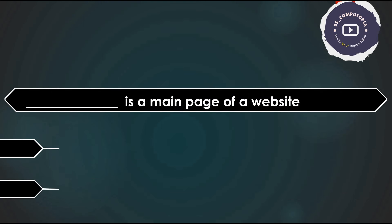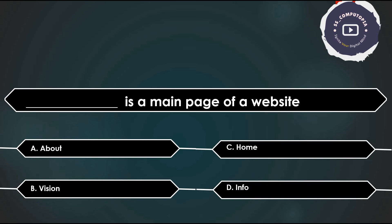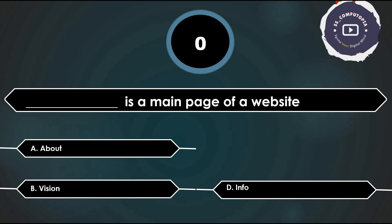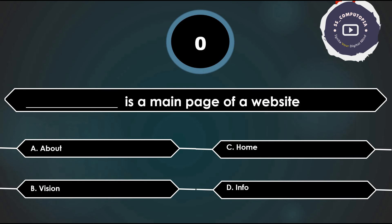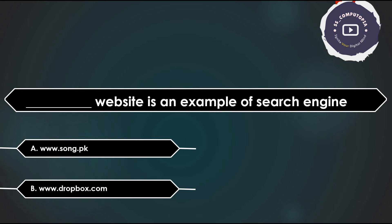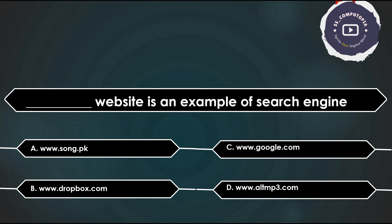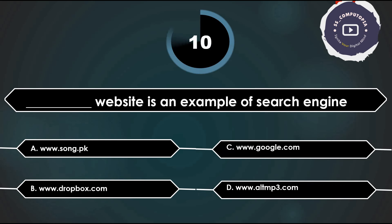What is the main page of a website — about, vision, home, or info? Answer is Home — the first page of a website is the home page. Which is an example of a search engine — www.songpk, dropbox.com, or google.com? Answer is Google.com.